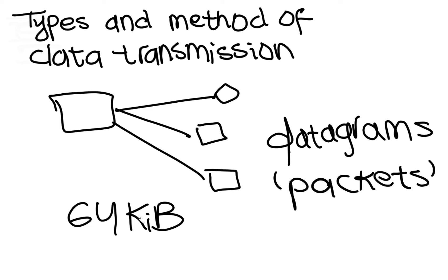The idea of splitting up data in this way means each packet can be sent along a different route to its destination. This would clearly be of great benefit if a particular transmission route was out of action or very busy.